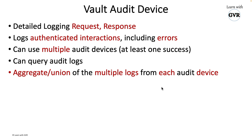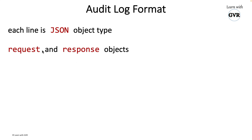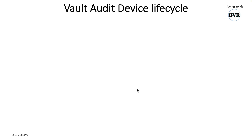Vault audit logs are in JSON format — every line is a JSON entry. Each JSON entry will have a request and response. In case of sensitive information like a retrieved username and password, that will be hashed using HMAC SHA256. It will persist into the logs in hashed form so that if somebody looks at the logs, they won't be able to understand the username and password.